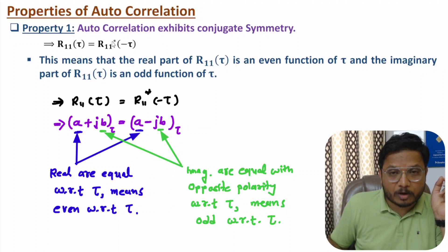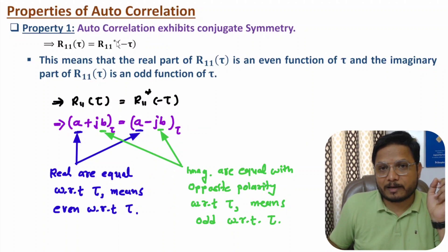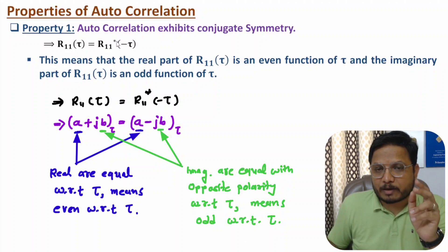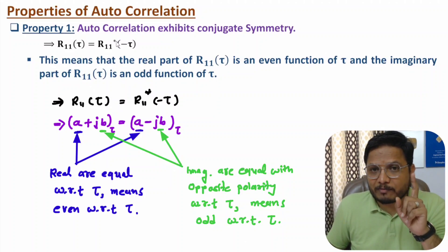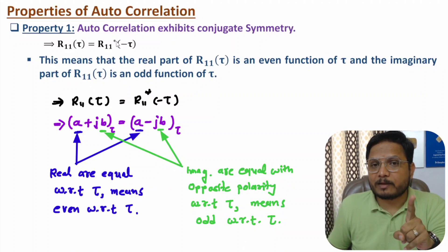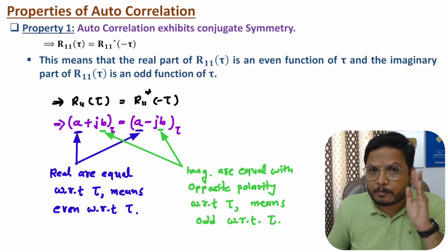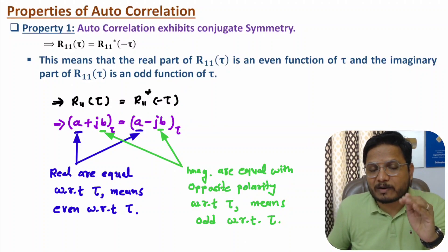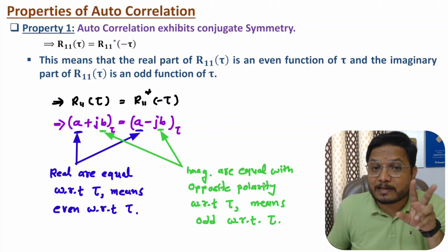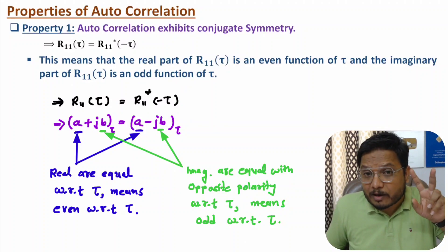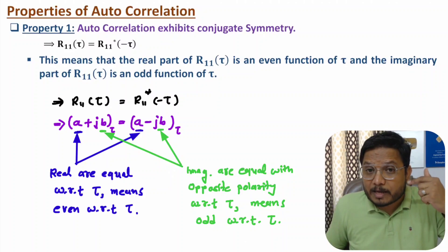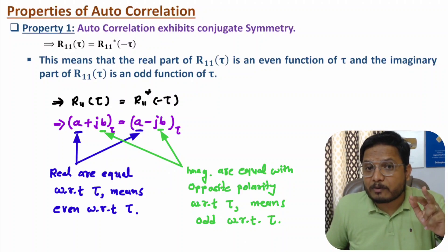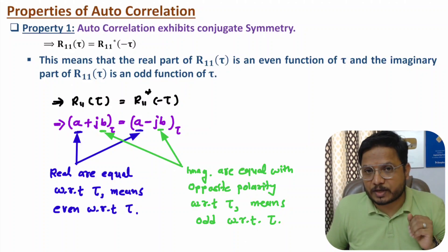So as per conjugate symmetry of auto correlation, one can say the real component of R₁₁(τ) is an even function, while the imaginary component of R₁₁(τ) is an odd function — as per conjugate symmetry.